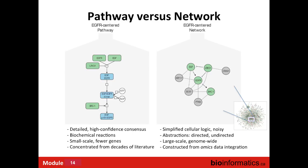It's important to distinguish between a pathway and a network. A pathway — like the EGFR receptor pathway — is a detailed representation studied over many years, curated from the literature with upstream/downstream events and feedback loops. A network is something derived from genomics data; we know the elements and the data tells us how they interact, but it is simpler than a fully curated pathway.